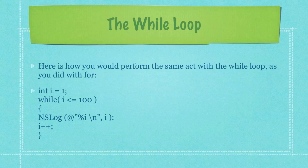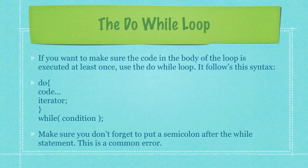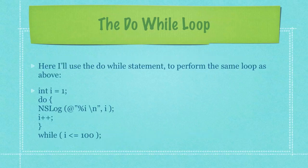If you want to make sure the code in the body of the loop is executed at least one time you would use the do while loop. You can see its basic syntax here on your screen. Make sure you don't forget to put the semicolon after the while statement because this is a common error. Here I'll use the do while statement to perform the same loop as I did previously with the for loop as well as the while loop.